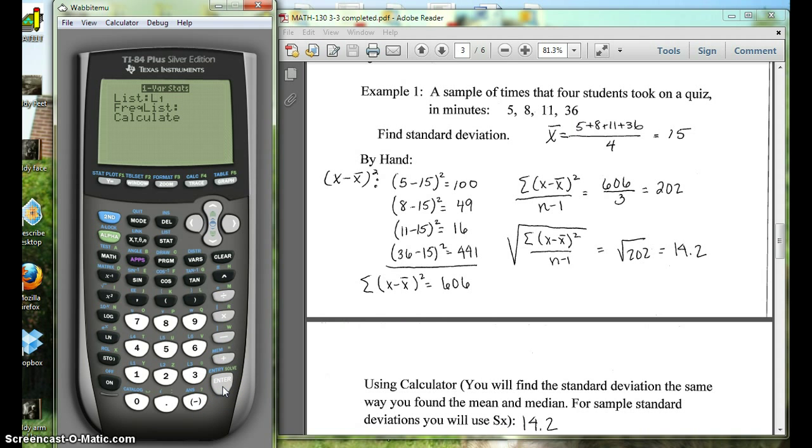You might not see this menu if you have the TI-83, and that's fine. It'll just say one-variable stats on your home screen and you'll hit enter. If you see this, your list should be L1. The frequency list you want blank, so clear out anything that's in there. Then go down to calculate and hit enter.